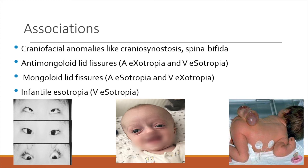Every time you have a child who has infantile ET, there are two or three characteristic features: large angle esotropia, with usually one eye preferring for fixation and the other eye usually being amblyopic. There may be an associated DVD, and the most commonly associated pattern is V-pattern. This is very commonly asked in your DNB vivas.